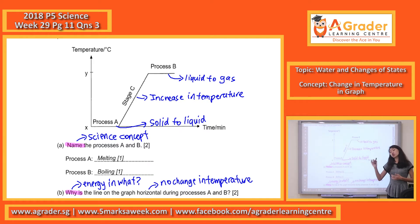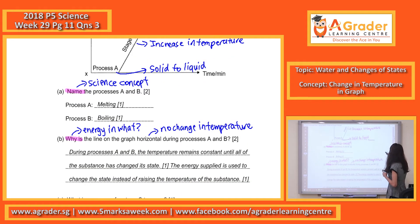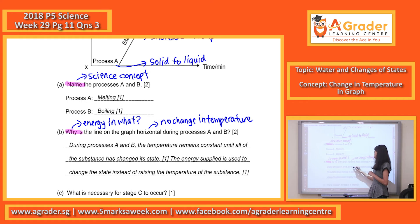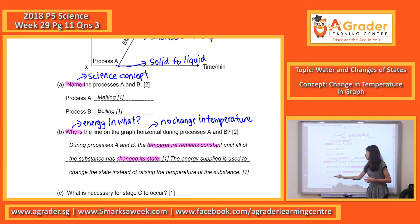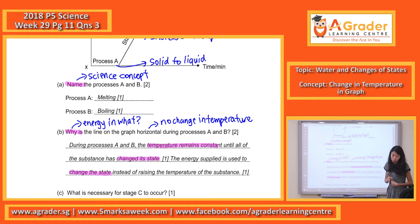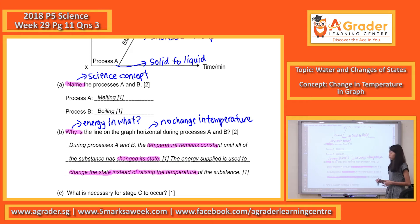The temperature will only start to increase when all the solid has melted into a liquid state. So please mention change in state and that the temperature remains constant. In process A and B, temperature remains constant until all of it has changed state, because the energy supplied during this process is used to change state instead of raising the temperature of the substance. Temperature will only increase when the state has fully changed — same applies for process B.